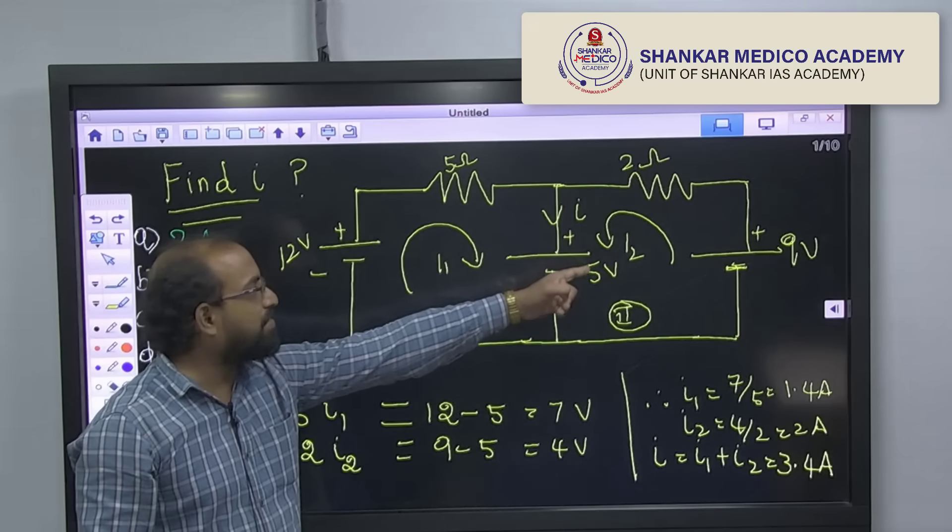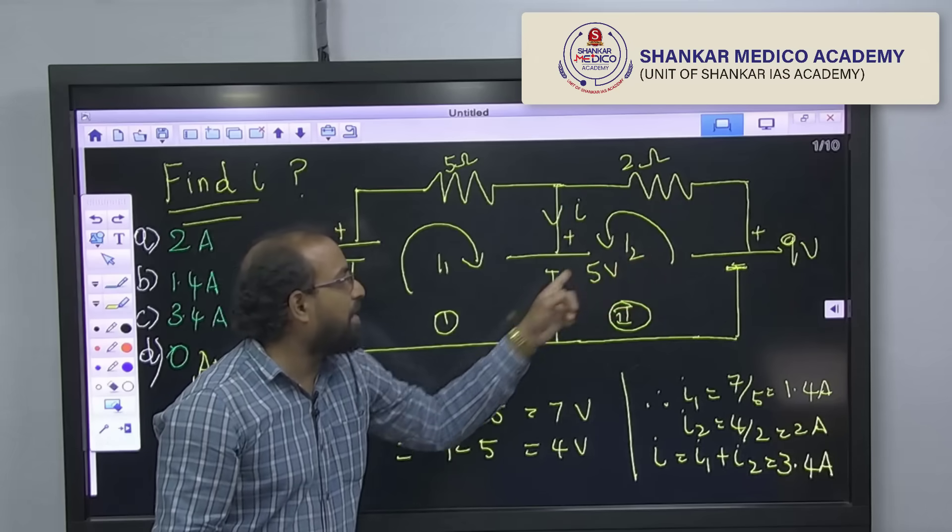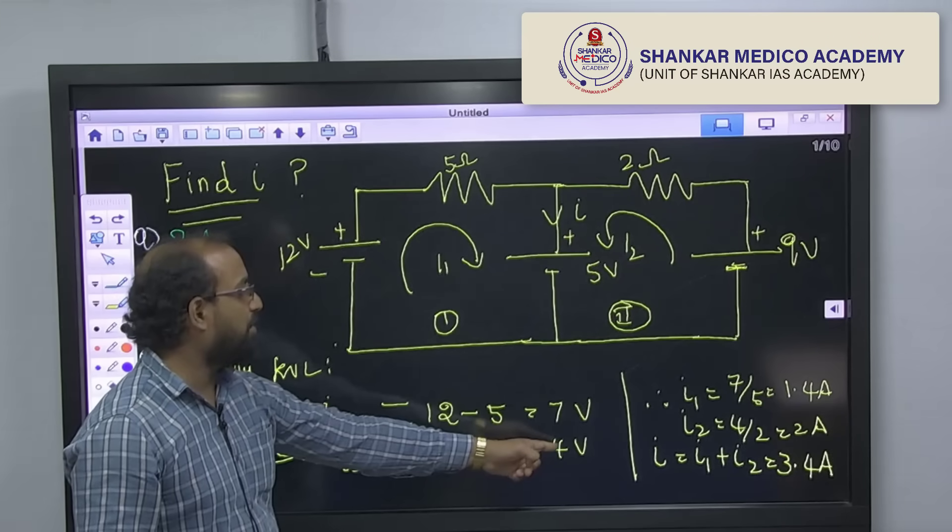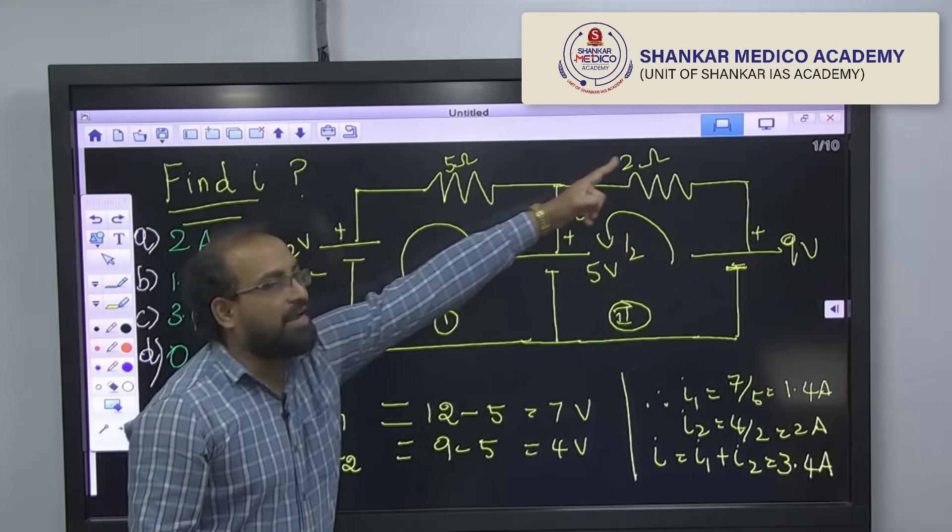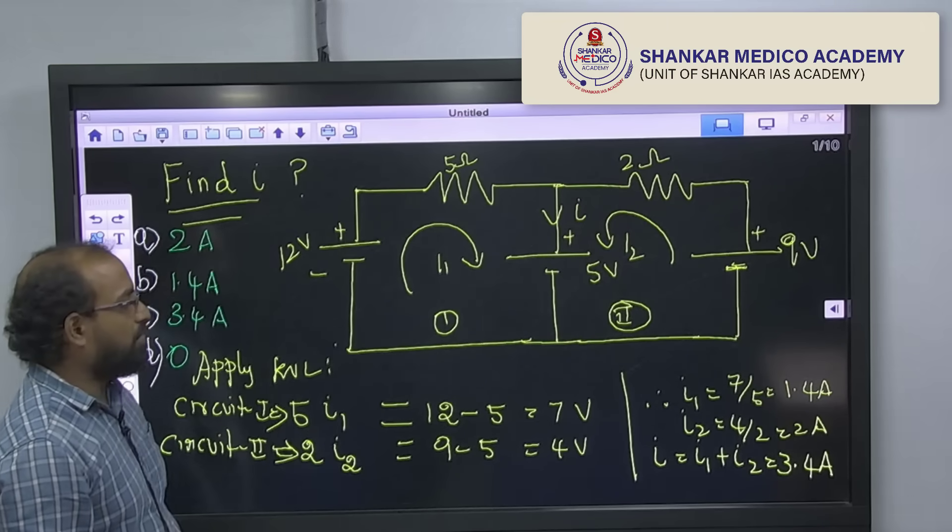Similarly, if you write the equation for the second loop, you can get there is two battery voltages, 9 minus 5, the net voltage is 4 volt. And across this 2 ohm resistor, your voltage is 2 into I2.